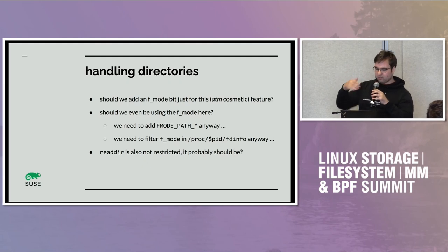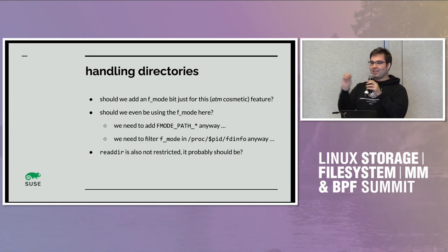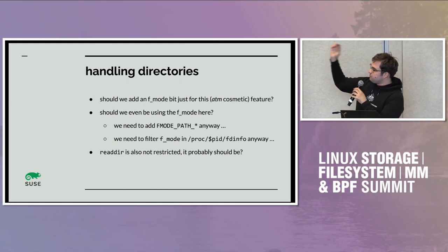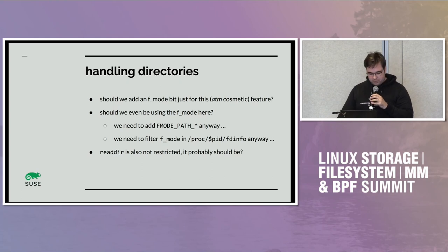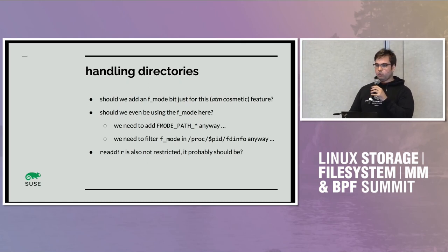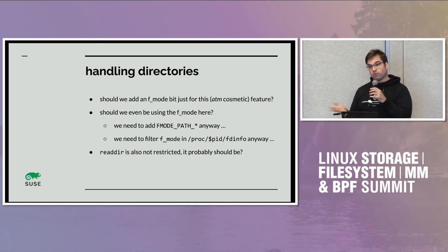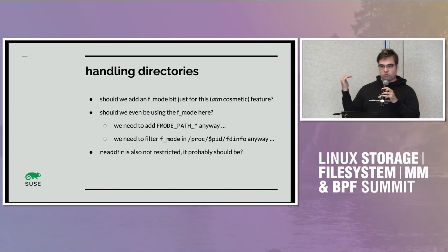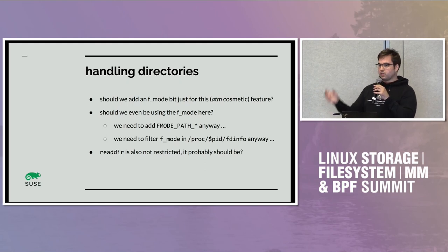The nicest thing would be if the mode of the magic link to a directory acted the same as if it were an actual directory: if it had no read bit, you could not readdir; if you had no exec bit, you could not resolve through it. All of this would be stuff you can deny using open_at. That means you could use open_at to control access.